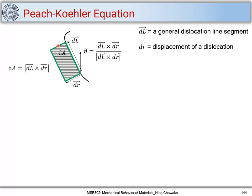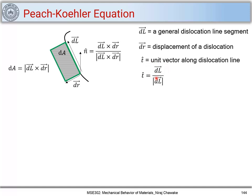Let's consider a normal to this area, called n, which can be found as the vector perpendicular to the area: n = (dL × dr) / |dL × dr|. This is a unit vector perpendicular to the cross-sectional area dA. Let t be the unit vector along the dislocation line, given as t = dL / |dL|.